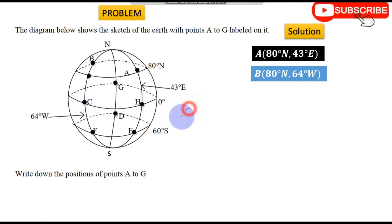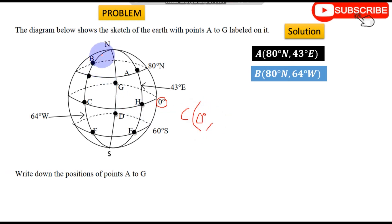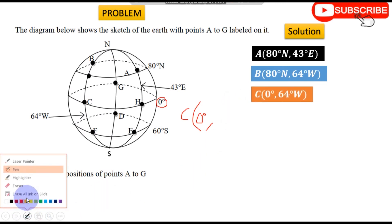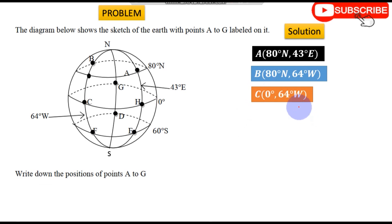Point C is seated on latitude zero degrees. As I said, if it is zero degrees in the latitudes, that is the equator and it doesn't have any pole — so you just write zero degrees. Then the longitude: C is on the same longitude as B, so it is still 64 degrees West. For C we have zero degrees, 64°W.